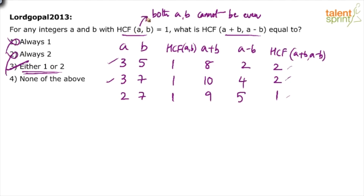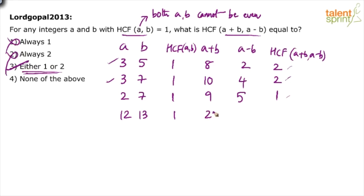For a complete solution, consider all cases: both odd, one even and one odd — both even is ruled out. We've verified both. Let's try one more: a=12 and b=13. HCF is 1. Then a+b = 25, a-b = 1, and HCF of 25 and 1 is 1. So you'll either get 1 or 2, confirming the answer is either 1 or 2, which is option 3.